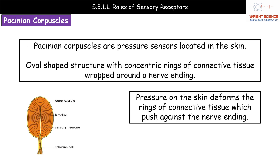The specification gives the particular example of Pacinian corpuscles. These are located in your skin and detect different pressures. In the diagram, the Pacinian corpuscle kind of looks like a sliced onion because we can see all these concentric rings — circles one inside the other. All those concentric rings are made of connective tissue. At the very centre there is something like a little thread going through — that is our sensory neuron, our nerve ending. So we have concentric rings of connective tissue wrapped around a nerve ending.